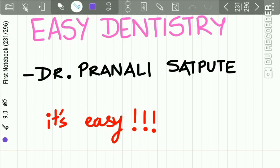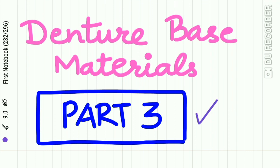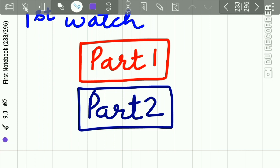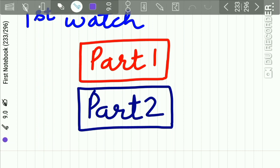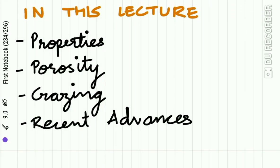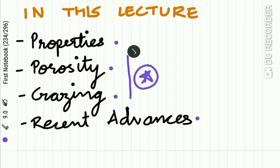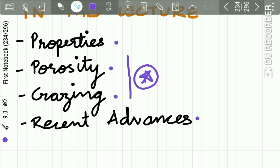Hello everyone and welcome back to Easy Dentistry, a channel that makes dental education incredibly easy. Today we will be studying Part 3 of denture base materials. This topic is very vast, so we are studying it in four parts. Parts 1 and 2 are already uploaded — please find the links in the description box and watch those lectures first. In this lecture we will be studying the properties of denture base materials and various problems occurring during processing, like porosity, crazing, and recent advances. Porosity and crazing are very important questions asked in exams, both in viva and short answer questions.